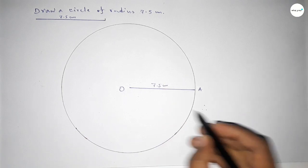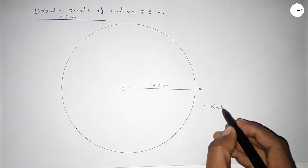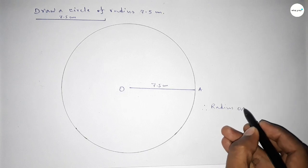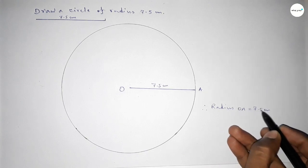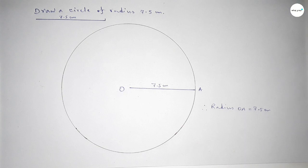So therefore radius OA, radius OA equal to 7.5 centimeter. That's all, thanks for watching. If this video is helpful to you then please share it with your friend. Thanks for watching.